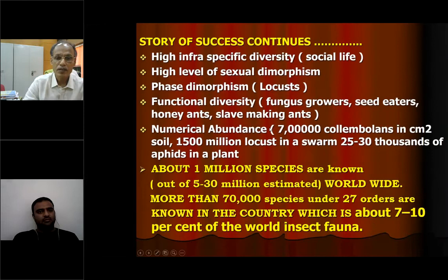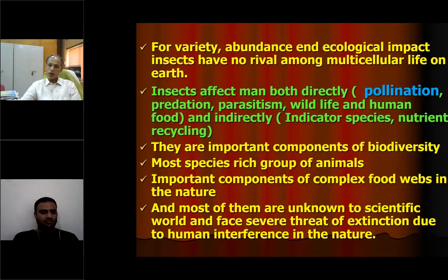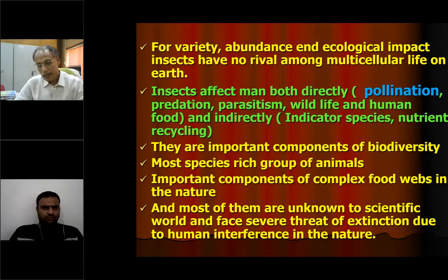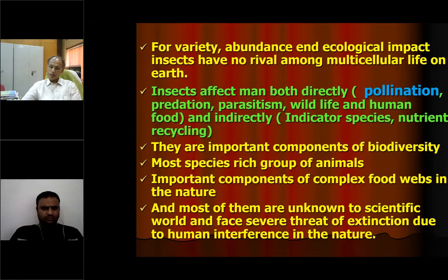If a nuclear war came again, scientists say the only creature that may survive is the cockroach — from that itself you can understand the strength of insects. For variety, abundance, and ecological impact, insects have no rivals among multicellular life on earth. I already told you 75% of biodiversity are insects. Insects affect man both directly and indirectly — they are either beneficial or harmful. The beneficial aspects include pollination: without pollination there is nothing on this earth. Insects also help with predation, parasitism, and as wildlife and human food.